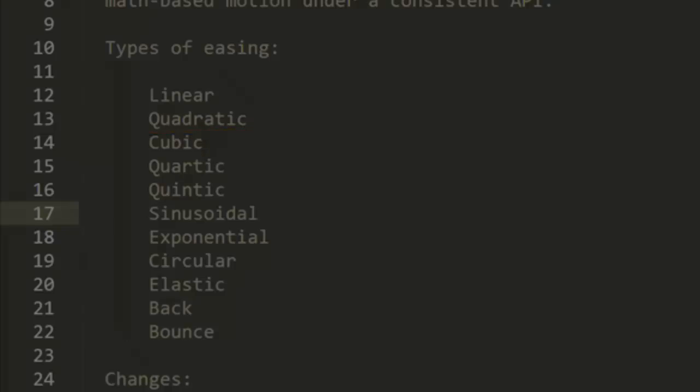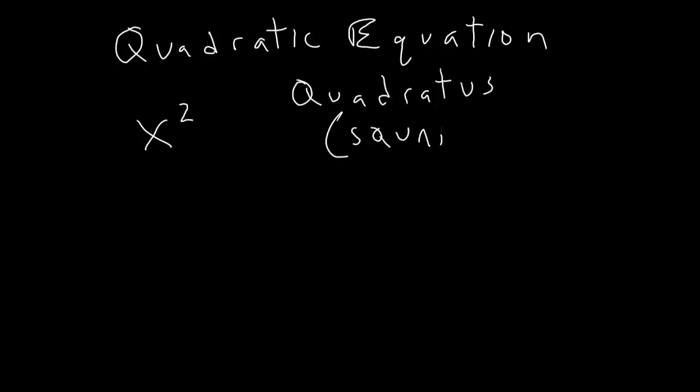Now, first of all, what do we mean by quad? Well, this has to do with the fact that a quadratic equation is used. And what is a quadratic equation? It's an equation where the highest power is 2. This comes from the Latin word quadratus, which means square. In other words, we're squaring some number in the formula.